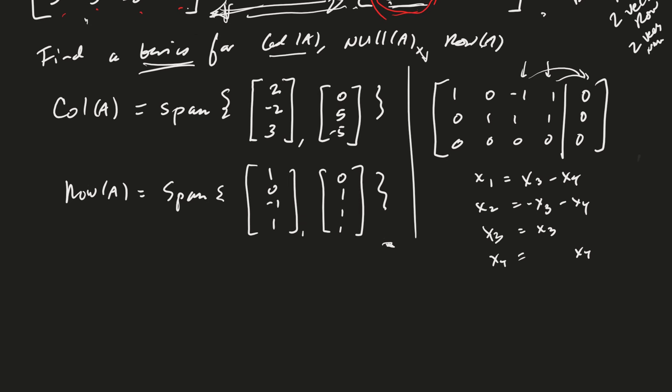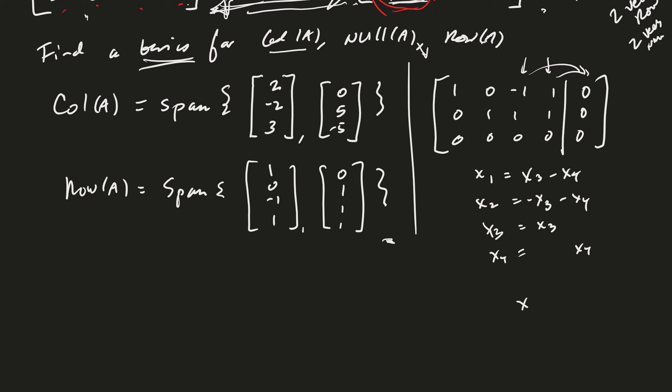And so therefore we have X3 times [1, -1, 1, 0] plus X4 times [-1, -1, 0, 1]. So here are the two basis vectors for the null space of A. Excellent. But you remember all that from linear algebra, right?